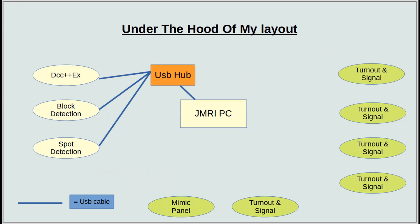On my layout I use two types of layout control bus. The first uses USB cables to transfer data to and from JMRI and to the Arduino DCC EX and CMRI nodes. One issue with this method is you only have a few USB outlets on your PC. You can get around this by adding a powered USB hub, which will give you more available COM ports to use.